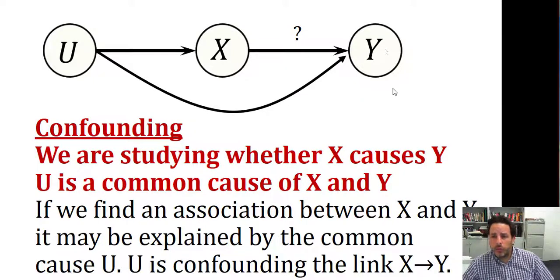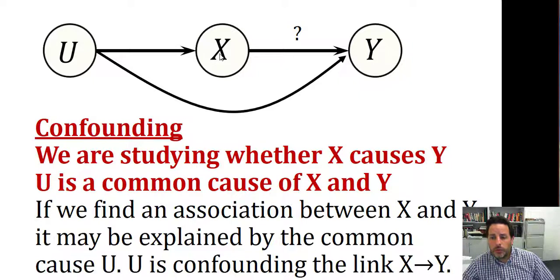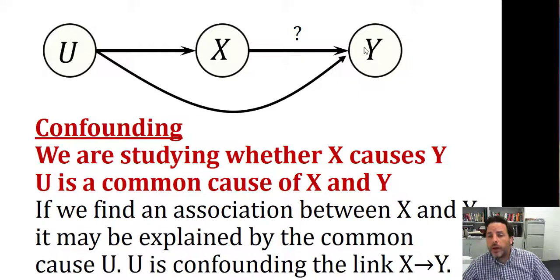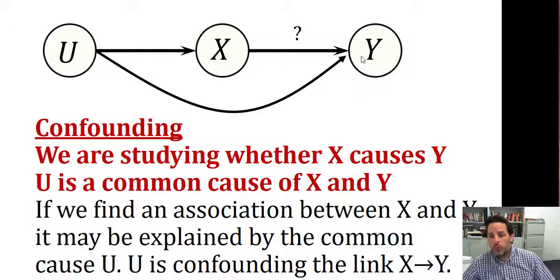Let's say we measure X, Y, and U in a study. We found an association between X and Y. This association may be related to U being a common cause of X and Y — not because X and Y are causally related, not because X causes Y. We may find an association which is not indicating a causal link because we have this common cause that affects both variables. So U is the confounding of the relationship between X and Y.